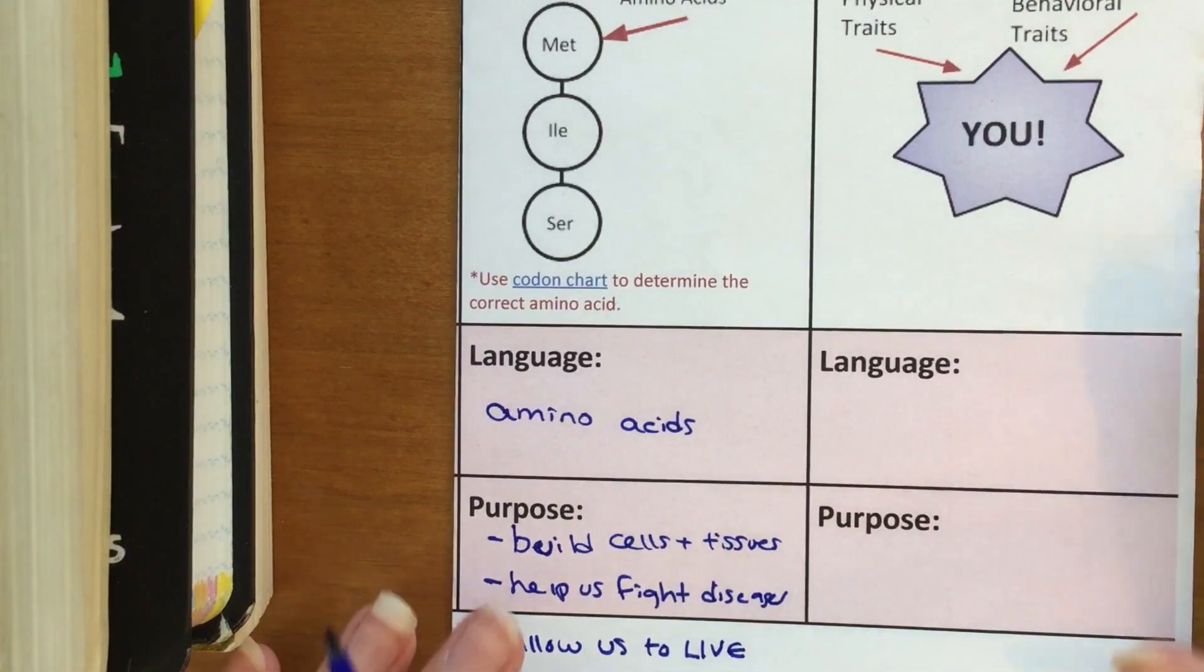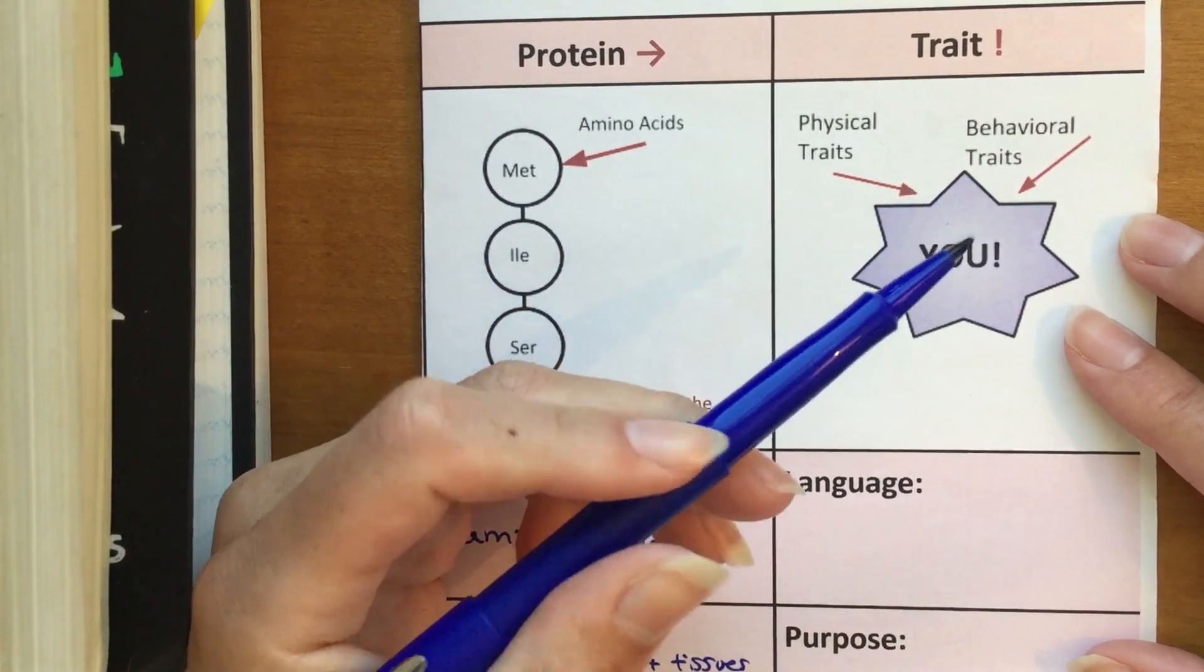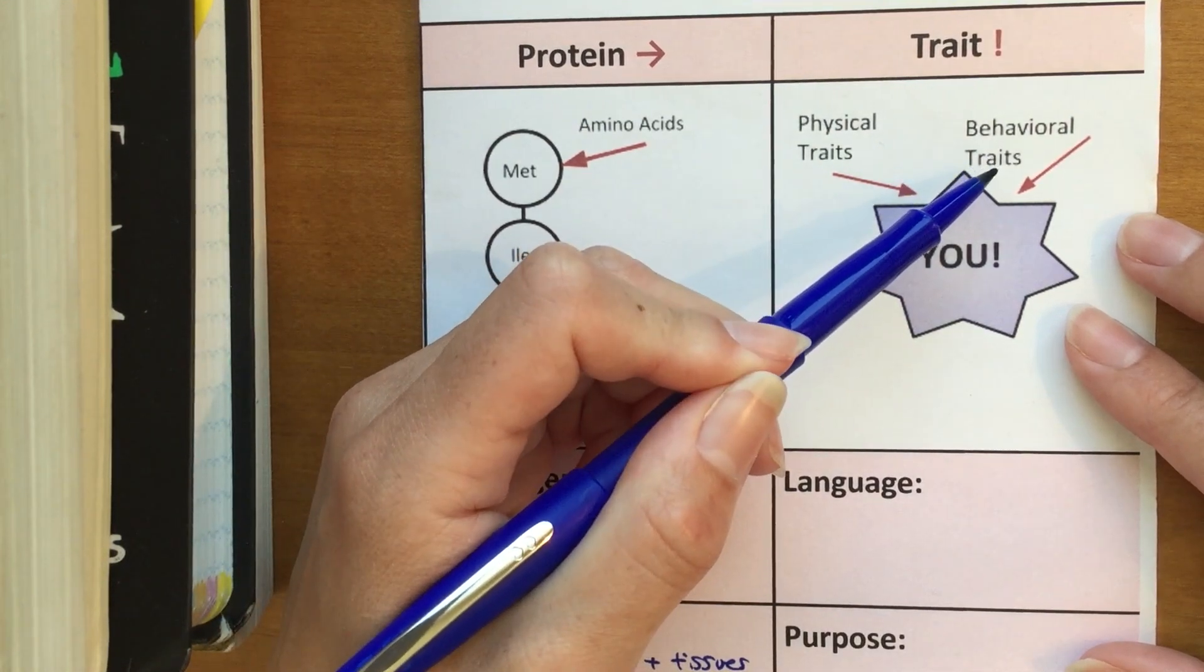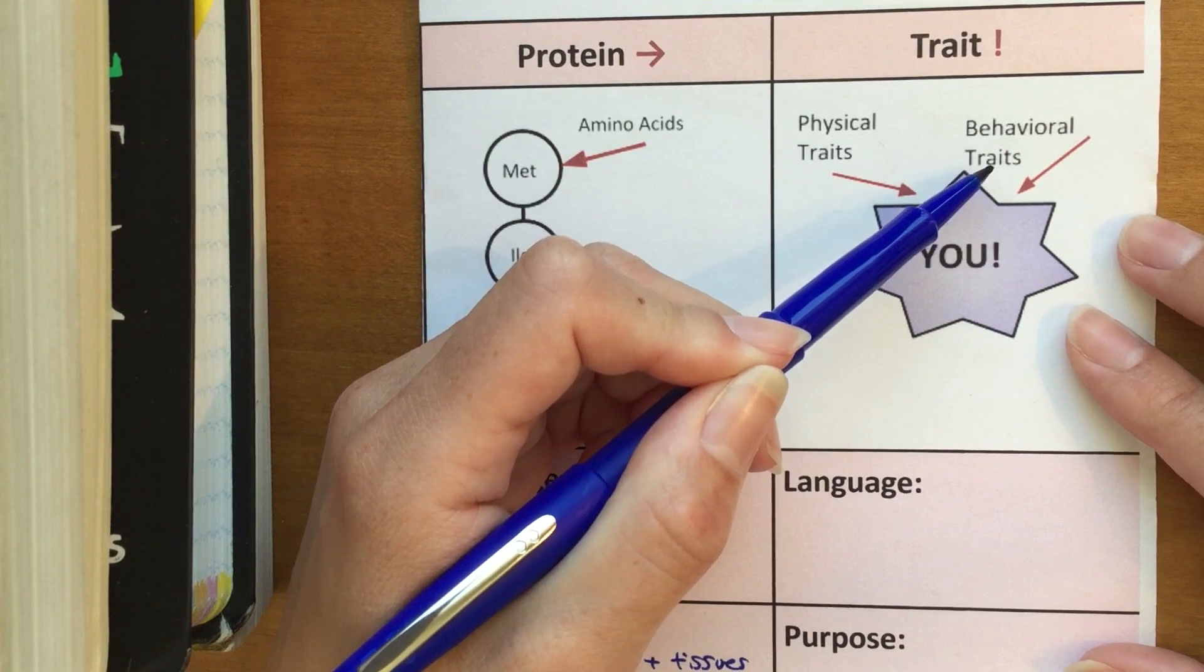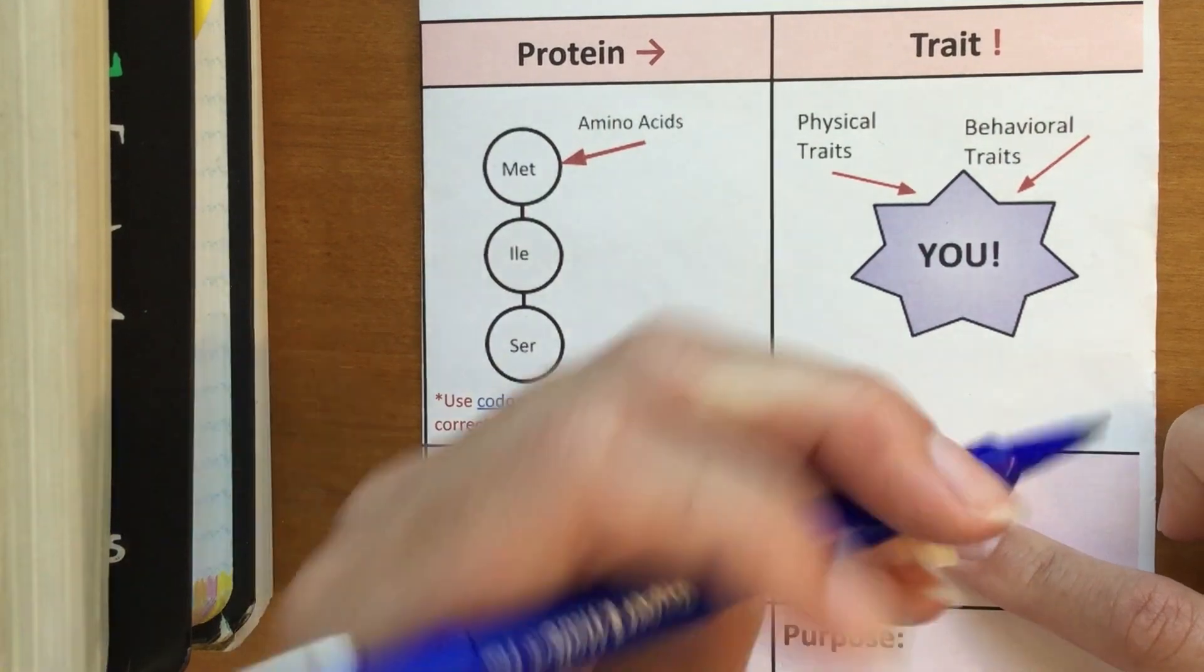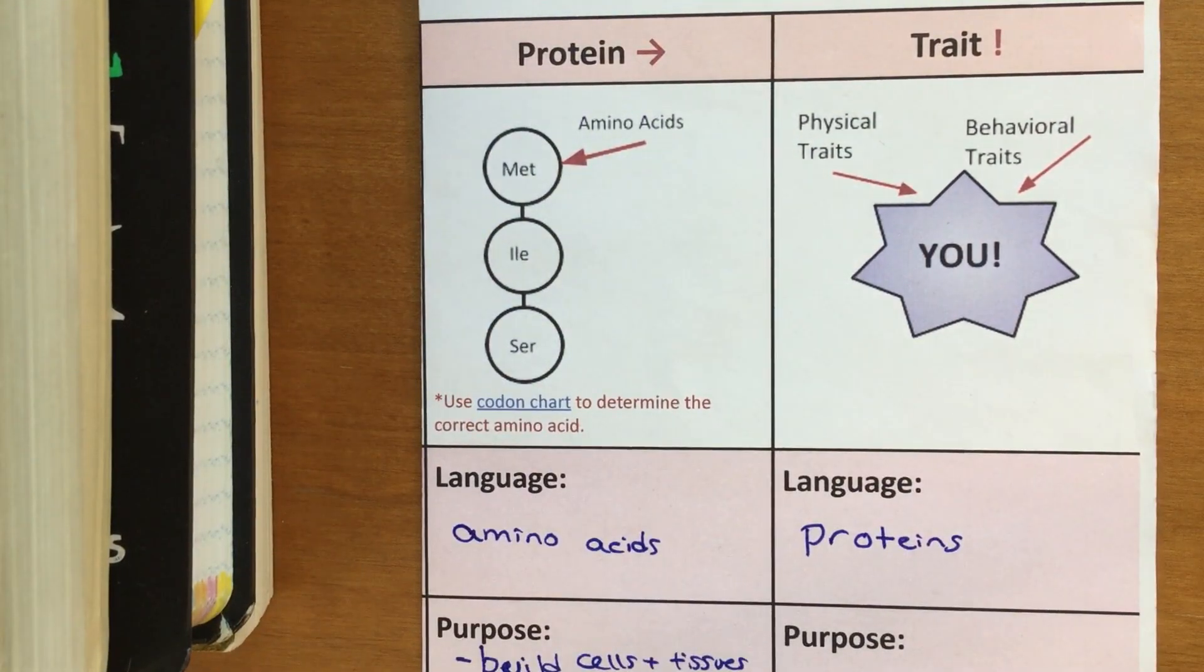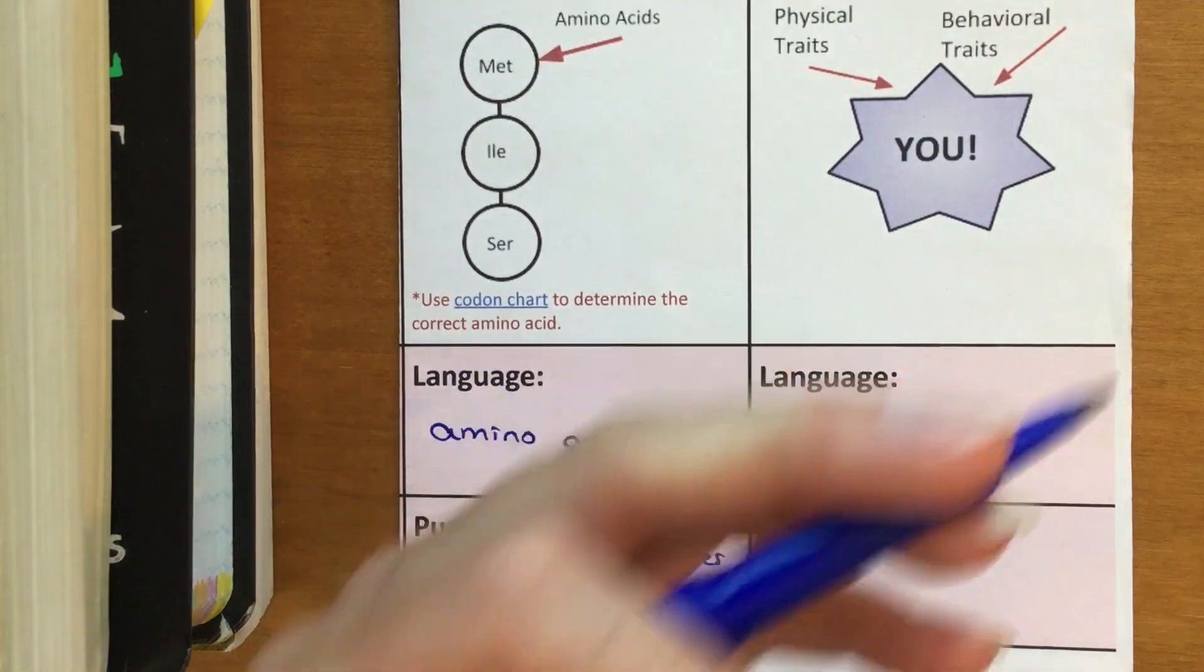Lastly, we've got traits. Traits are what make us unique. Typically speaking, we have physical traits, things related to your appearance like your hair color. And then you have behavioral traits, maybe something like an aggressive personality or a more timid personality would be more behavioral type traits. So the language of traits are proteins. Proteins tell us what your traits are going to be. They influence those two types of traits I talked about up here. And the purpose of traits is to make you unique.